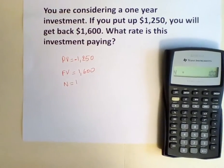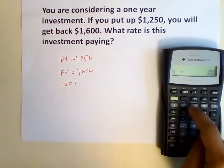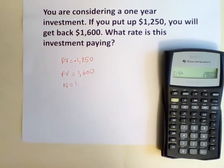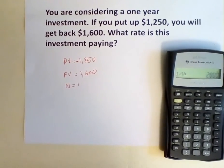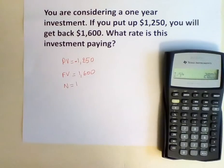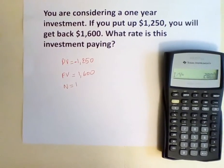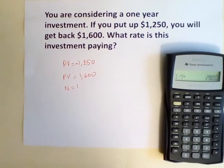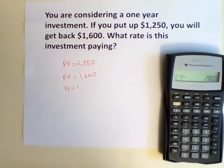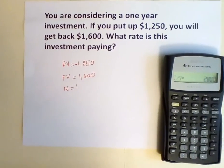And then to compute the interest rate, we push the CPT button, I over Y, which is interest. And we can see that this investment yields a 28% return. So if we were to put up $1,250 today, invest it for one year, and get back $1,600 in the future, then that means this investment gives us a 28% return — that's the investment yield.